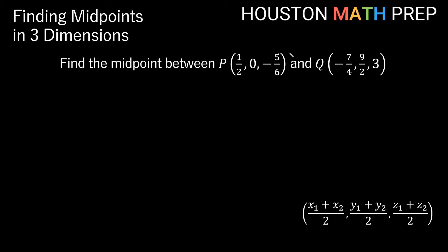Taking a look at another example that contains some fraction action in it, we want to find the midpoint between P, which is the point 1 half, 0, negative 5 sixths. So the 1 half is my x1, 0 is my y1, negative 5 over 6 is my z1. And for Q, which is our second point, negative 7 over 4 is our x2, 9 halves is our y2, and positive 3 is our z2.